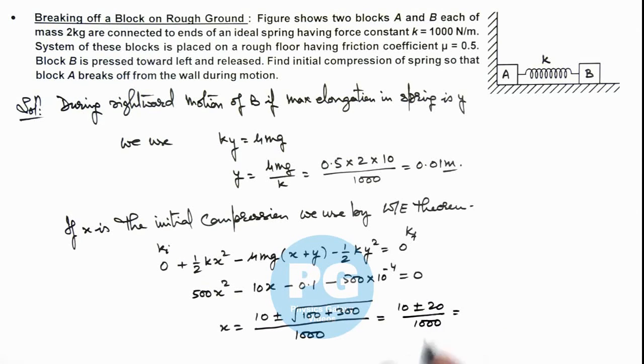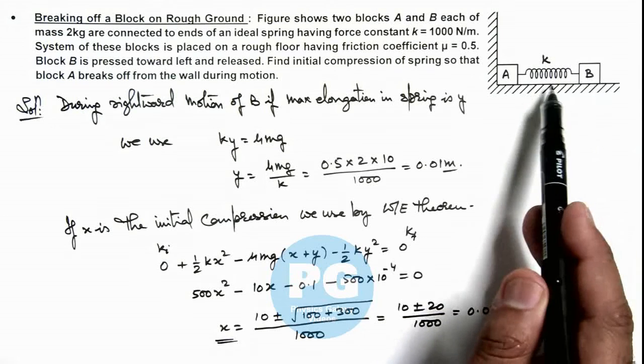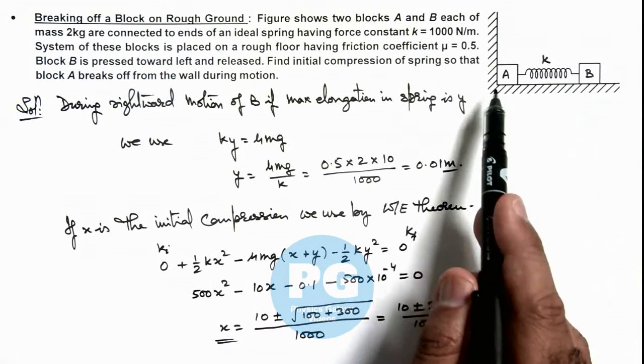So here the value will be, it cannot be negative, so the value will be 30 by 1000, this is 0.03 meter. That would be the value for which the initial compression in spring will be made by pressing block B so that on releasing block A will break off from ground.